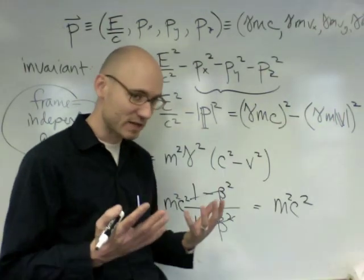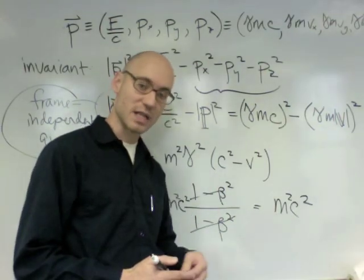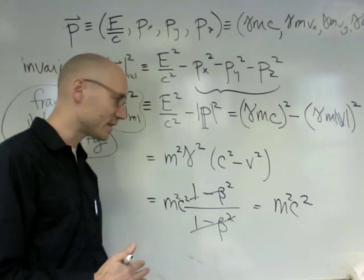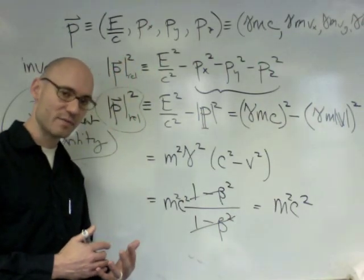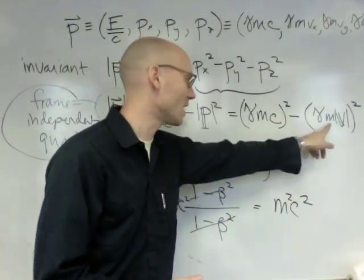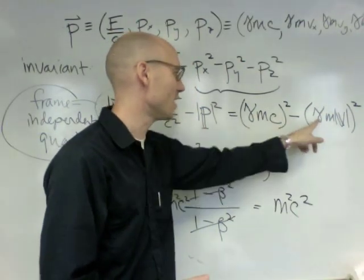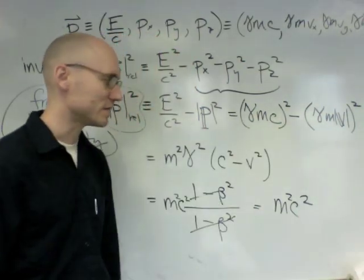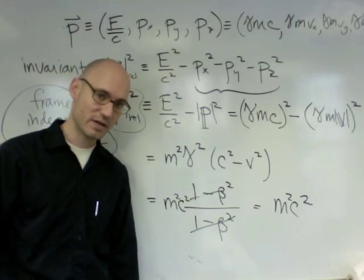and sure enough, this thing we got at the end involves nothing about the speed. It contains only the mass and the speed of light. It doesn't contain the speed of the object. So this really is plausibly an invariant. It's something that doesn't depend on the speed of the object. We've combined two things that do depend on the speed of the object. We've combined them,